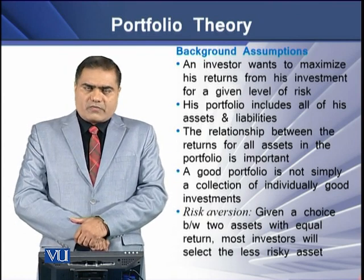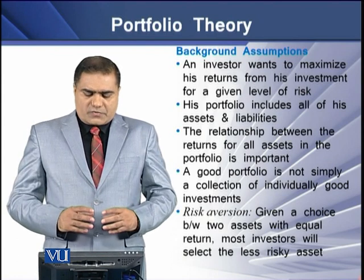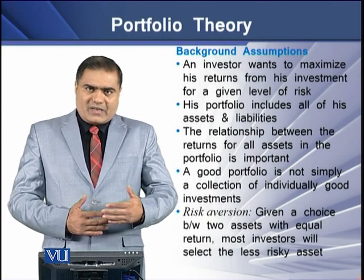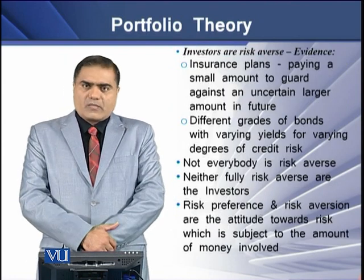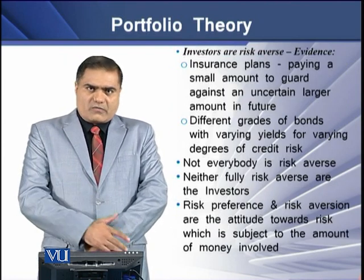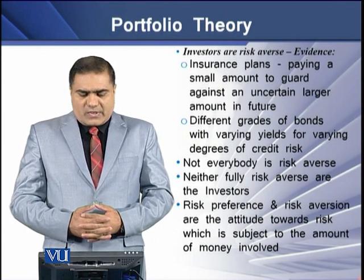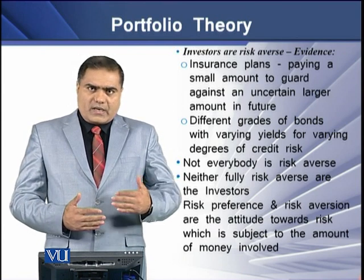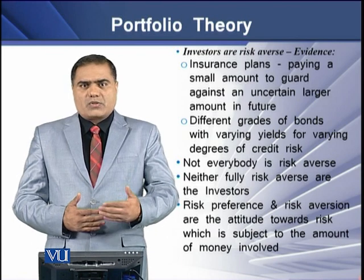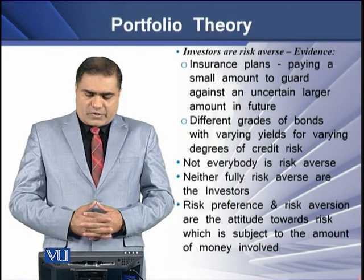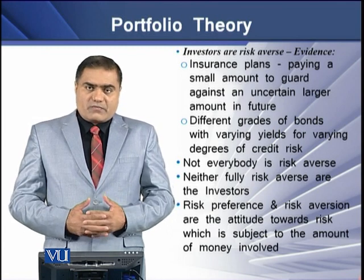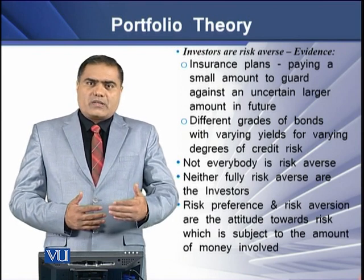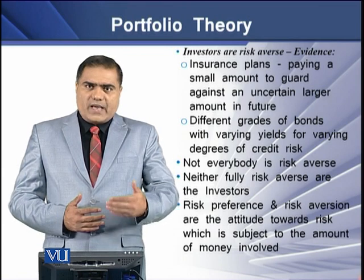There is a concept of risk aversion which says that given a choice between two assets with equal return, most of the investors will go for the investment having least riskiness. It is said that investors are risk averse, and we have certain evidence. For example, this may include an insurance plan where someone pays a little amount at present in order to avoid a larger amount of cash outflow in future. Similarly, different grades of bonds with varying yields and varying degree of credit risk are offered to investors of varying likings for riskiness.